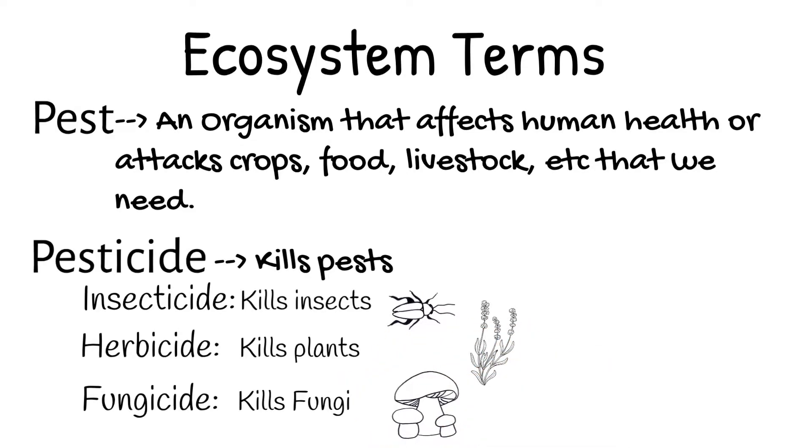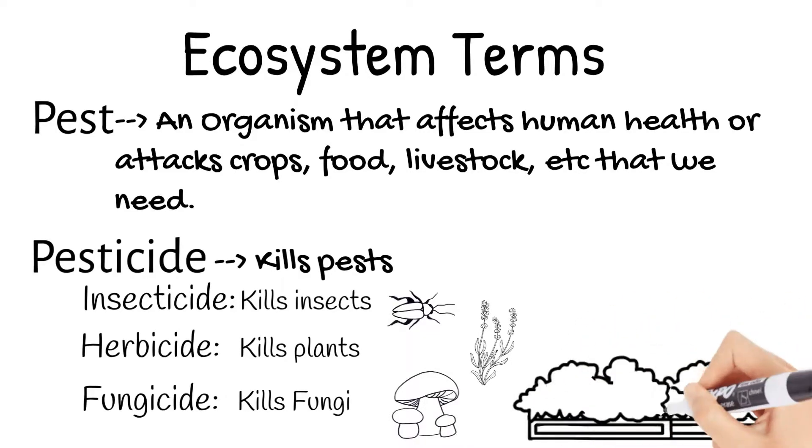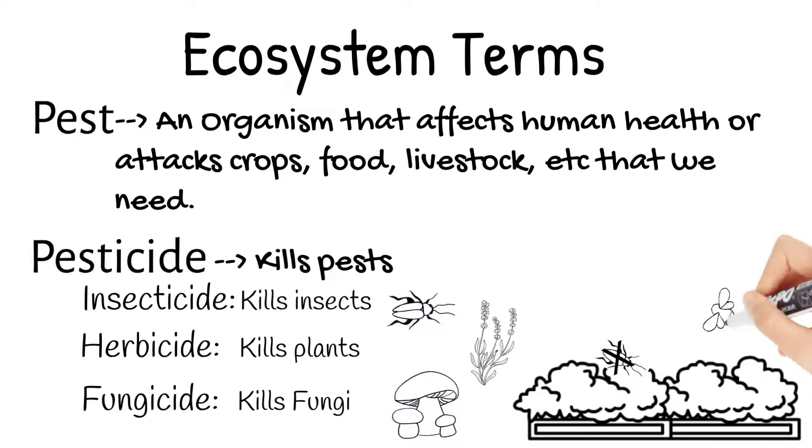A tricky part with pesticides is they may kill more than you want. Say there's a beetle eating your garden, but some pesticides that will kill them might also kill bees, which your garden and flowers need to grow.